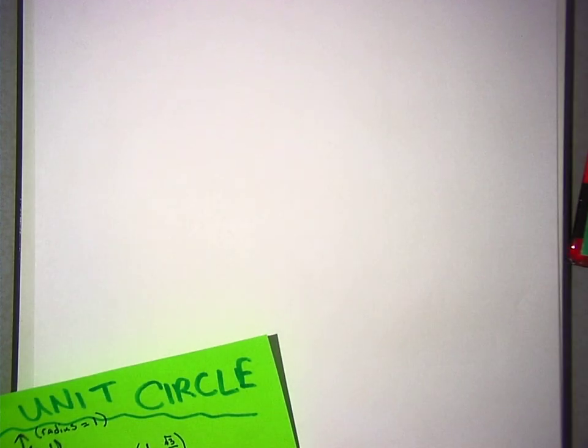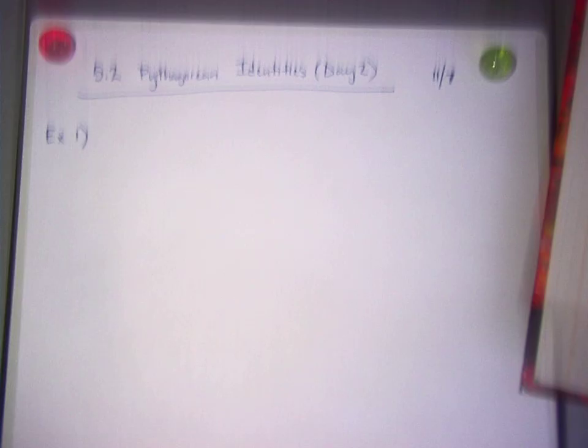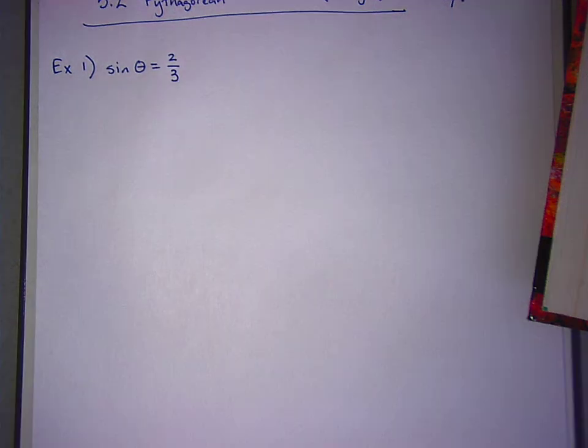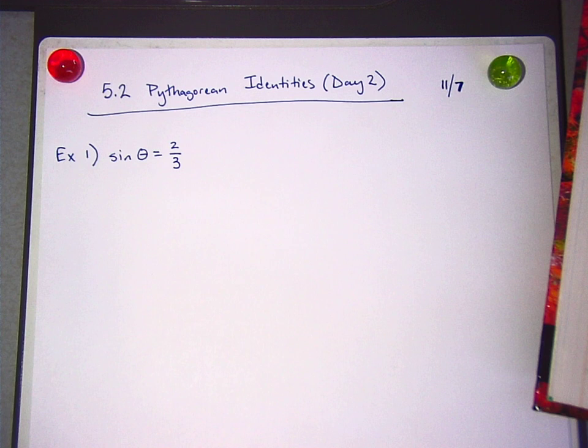So now I'm going to show you how we can use that with two pretty easy examples. We're going to do two examples. Everybody write this down. Example one. All right. Everybody write down that sine of theta equals two-thirds. The name of the lesson is Pythagorean Identities Day 2, 5.2. Today is 11-7.